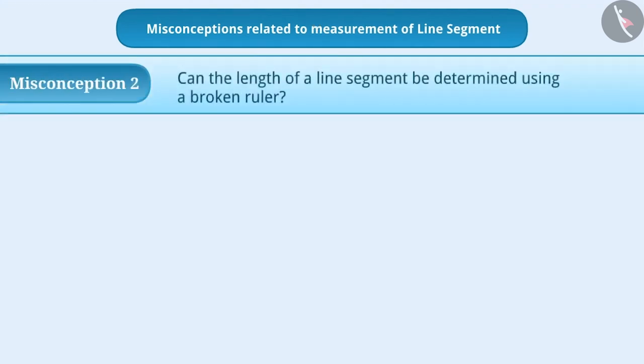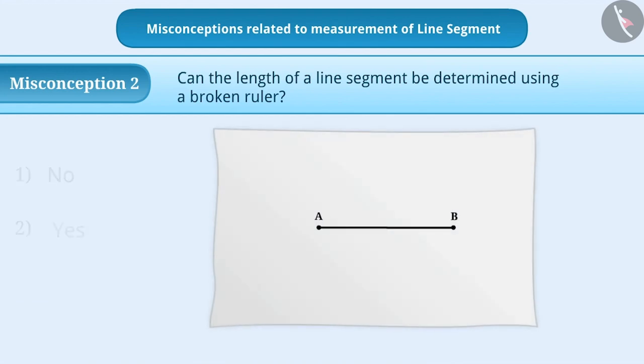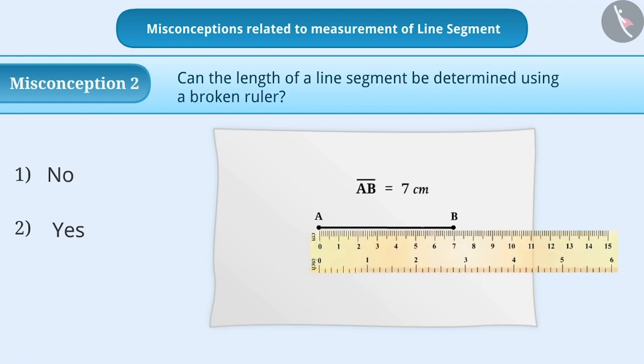Misconception 2. Can the length of a line segment be determined using a broken ruler? Many students misunderstand that the length of a line segment can be measured only from zero mark of a ruler. If the ruler is broken, then it cannot be used to determine the length of the line segment.